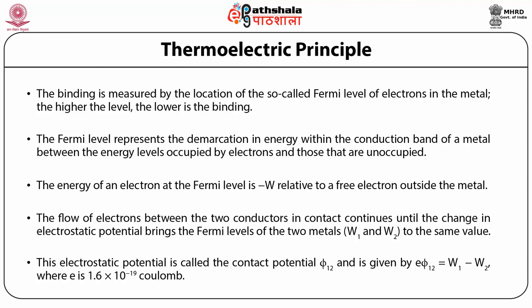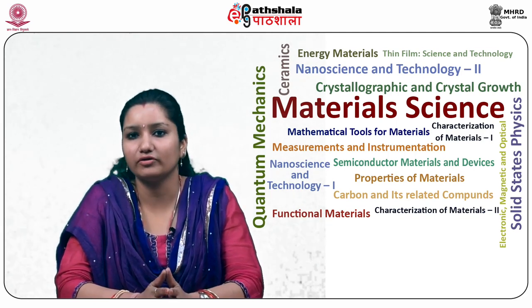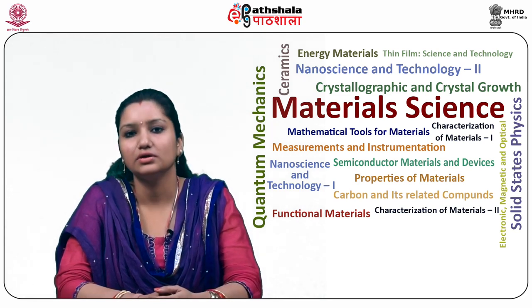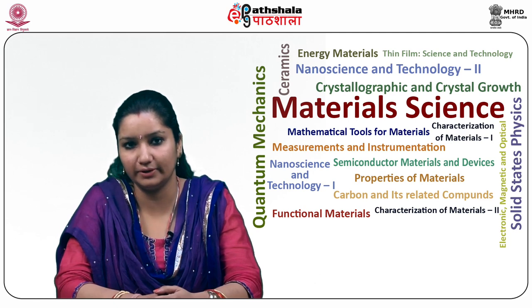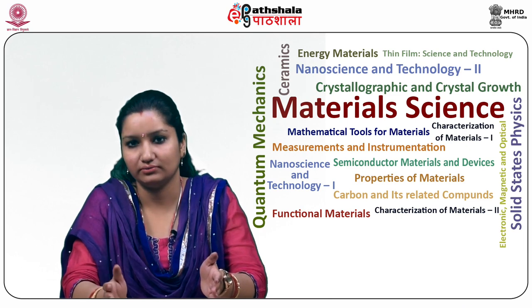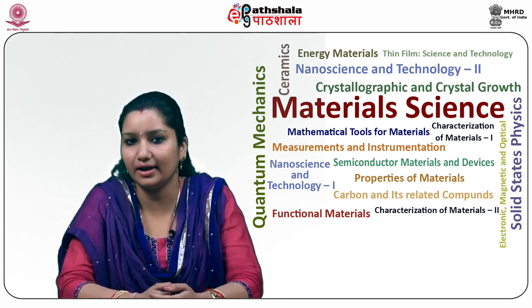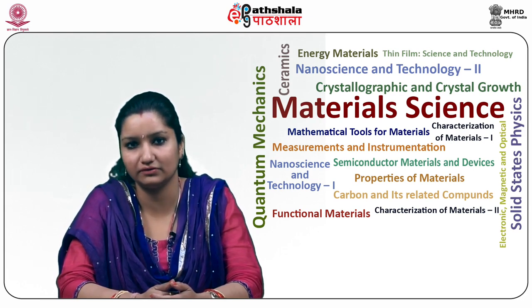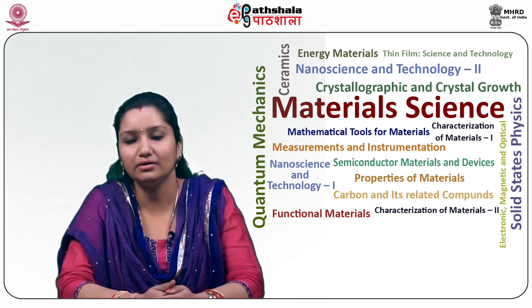If a closed circuit is made of two different metals, there will be no net electromotive force in the circuit because the two contact potentials oppose each other and no current will flow. However, if the temperature of one junction is raised with respect to the other, a net electromotive force is generated in the circuit, since it is unlikely that the two metals will have Fermi levels with identical temperature dependence. To maintain the temperature difference, heat must enter the hot junction and leave the cold junction.